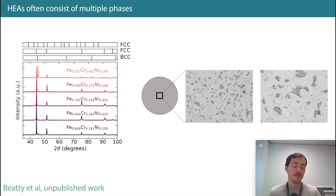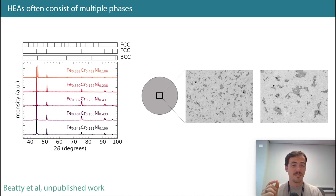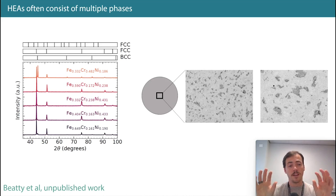In the early days of this work, we found that a lot of stuff that we thought was single phase was actually probably multiple phase. It just looked similar because the x-ray spectra were close — the lattice parameter wasn't too different — but you technically did have segregation into two different regions.